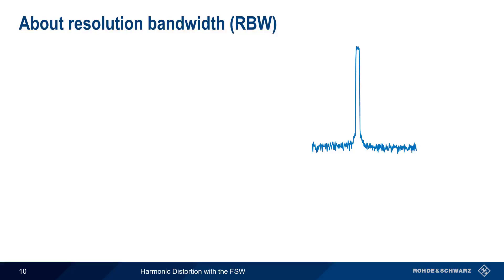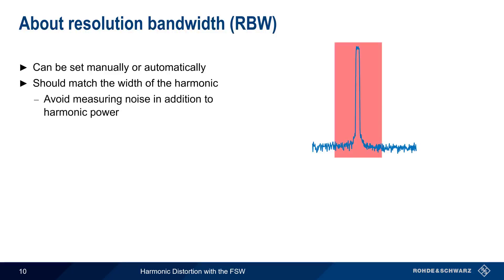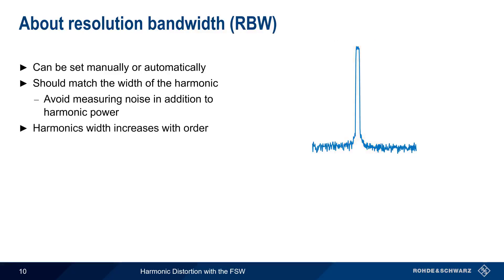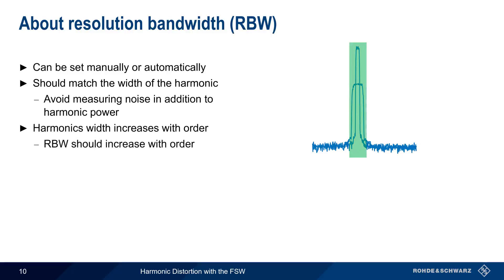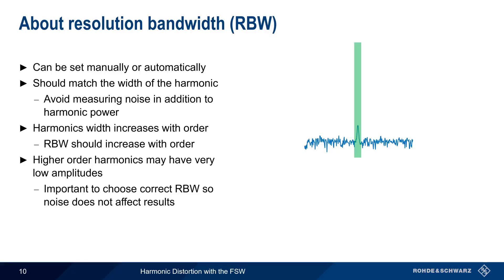Another important setting in harmonic distortion measurements is the resolution bandwidth, which can be set manually or automatically. As a general rule, the resolution bandwidth should match the width of the harmonic. Here, the green shaded area represents the width of the resolution bandwidth filter. Using too wide a resolution bandwidth, as shown here in red, will result in surrounding noise being added to the measured power of the harmonic. Keep in mind that harmonic width increases with increasing harmonic order — for example, the third harmonic of a signal is usually three times wider than the fundamental. Therefore, the resolution bandwidth should be increased with increasing harmonic order. Also remember that higher-order harmonics may have very low amplitudes, making it particularly important to choose a resolution bandwidth such that noise does not affect the results.